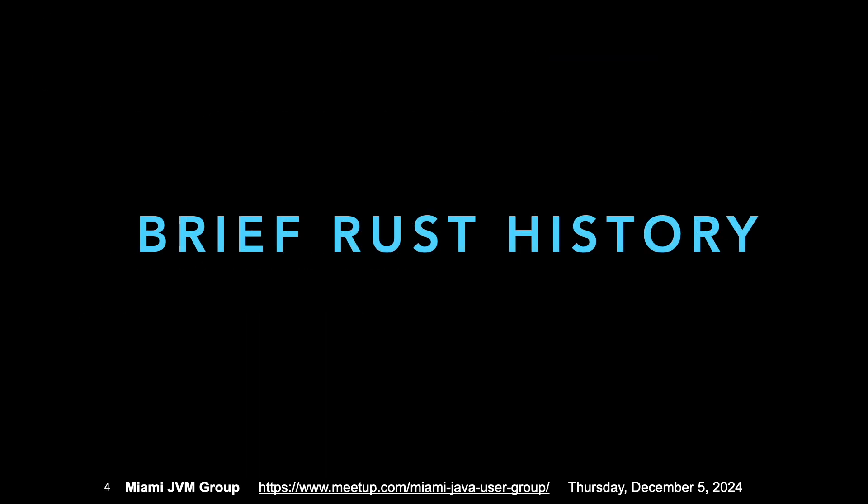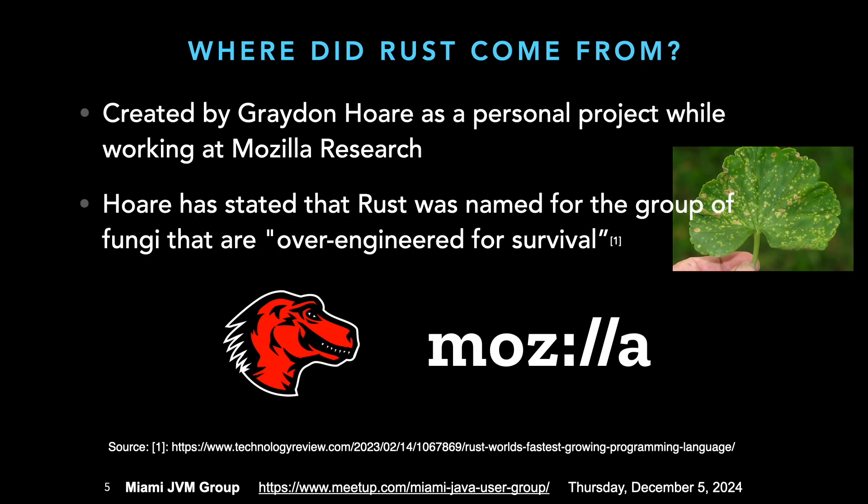We'll go back a little bit and do a brief history of Rust. Where did Rust come from? It was created by Graydon Hoare as a personal project while working at Mozilla Research. Hoare has stated that Rust was named after a group of fungi that are over-engineered for survival.